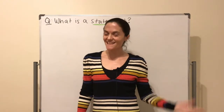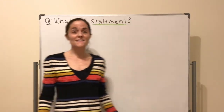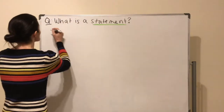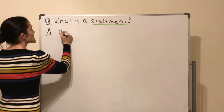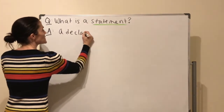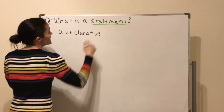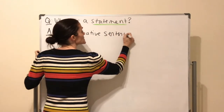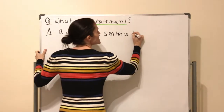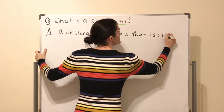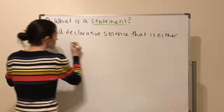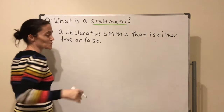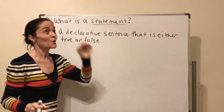We begin with logic and first we ask: what is a statement? It's a declarative sentence — typically about math, but not always — that is either true or false, but not both, and unambiguously so.